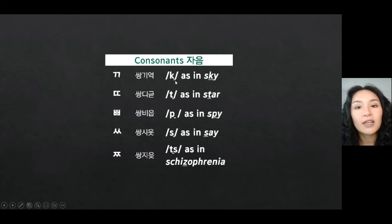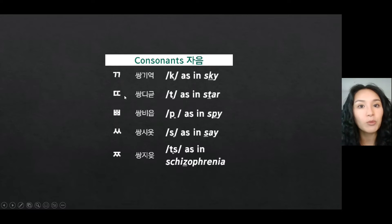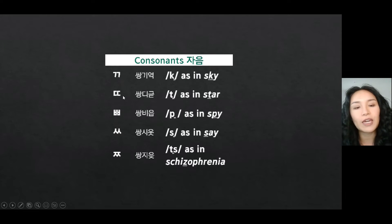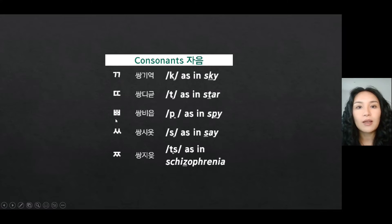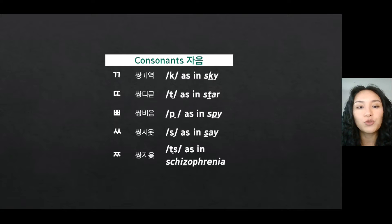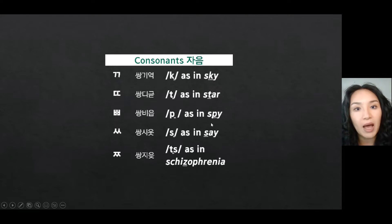The next one: the basic form goes D. If duplicated, it becomes T, as in 'star.' The next one: basic goes B. However, if duplicated, it goes P, as in 'spy.'